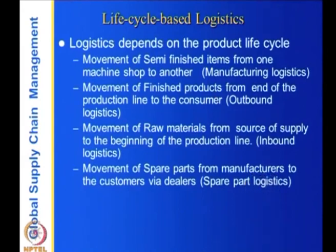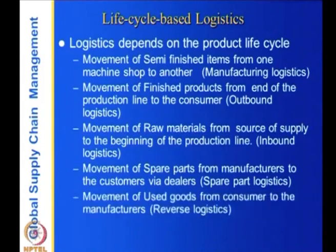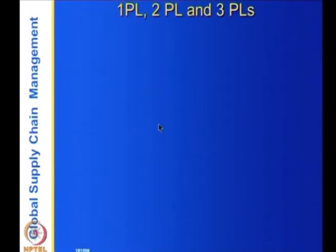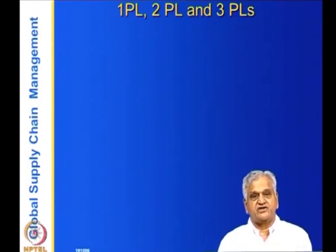Movement of spare parts from manufacturers to customers via dealers is called spare part logistics. Movement of used goods from consumers back to manufacturers is called reverse logistics - this becomes important when items like cars or cell phones need to be reused after disposal. So depending on which stage of the supply chain you are dealing with, the logistics varies from manufacturing to inbound to outbound to spare parts to reverse logistics, and each of these has its own peculiarities.